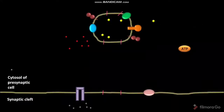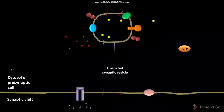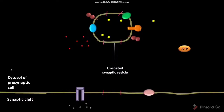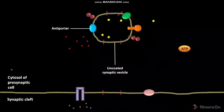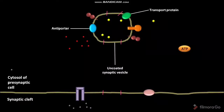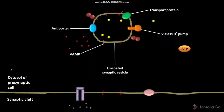This is the uncoated synaptic vesicle. The membrane of the uncoated synaptic vesicle consists of many proteins, like the antiporter protein, transport protein, V-class proton pump, and VAMP. The VAMP is a VSNARE.